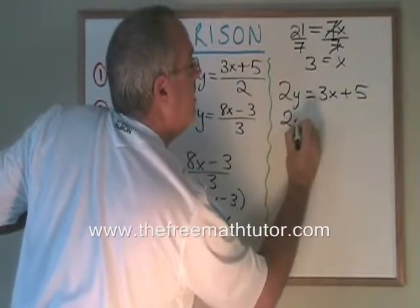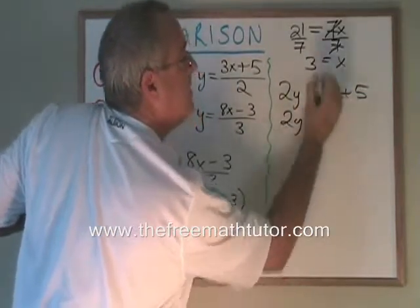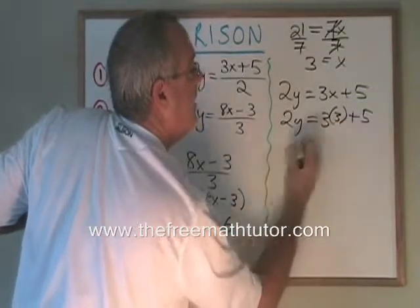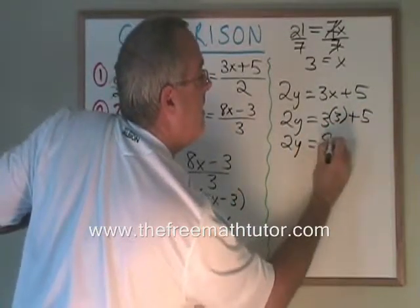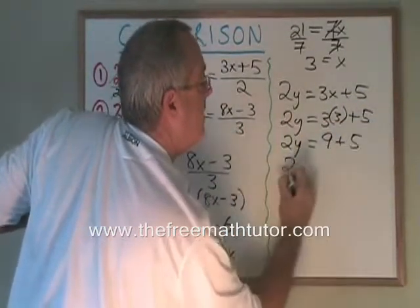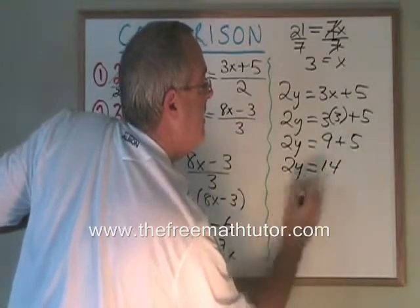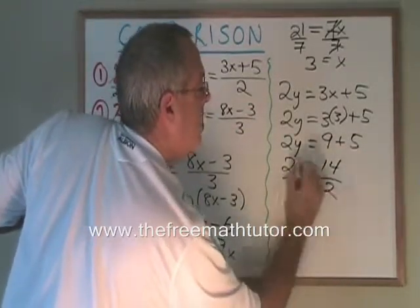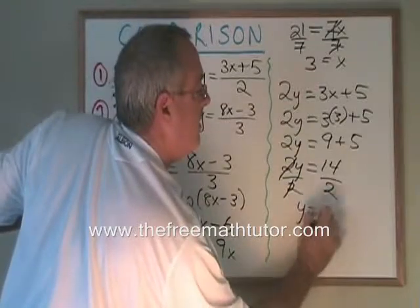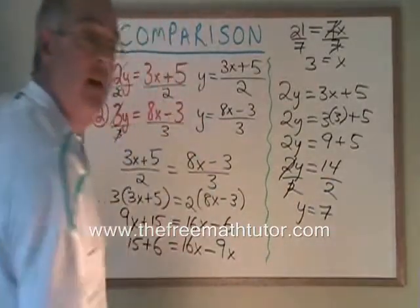I write the equation again. I replace x with 3 and I get 2y equals 9 plus 5. 2y equals 14. y is equal to 14 divided by 2, which is 7.